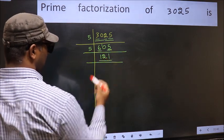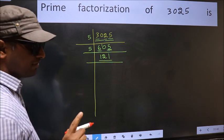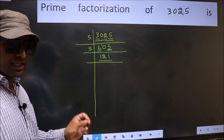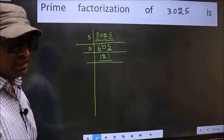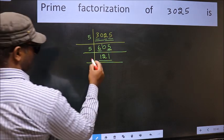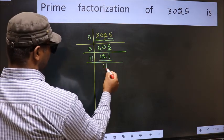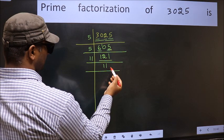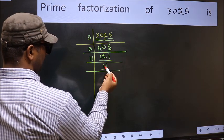Now, here we have 121. Always remember, 11 into 11 is 121. That is, 11 times 11 is 121. Now, here we have 11, and 11.